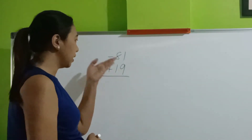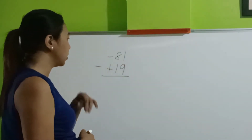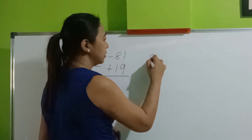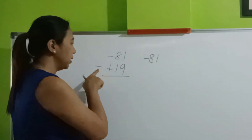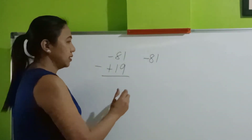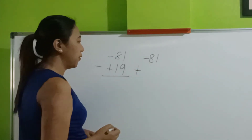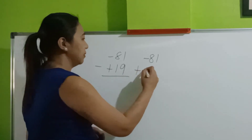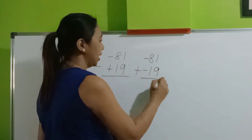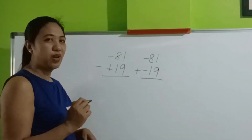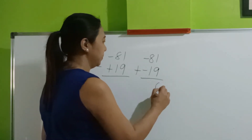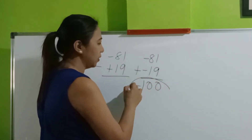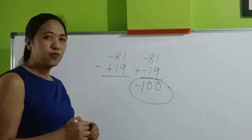Another example: negative 81 minus positive 19. Step 1, copy the minuend. Step 2, turn this into plus. Step 3, change the subtrahend into its opposite sign. Then follow the rule in addition of integers. The sign is negative, so this is now negative 100.